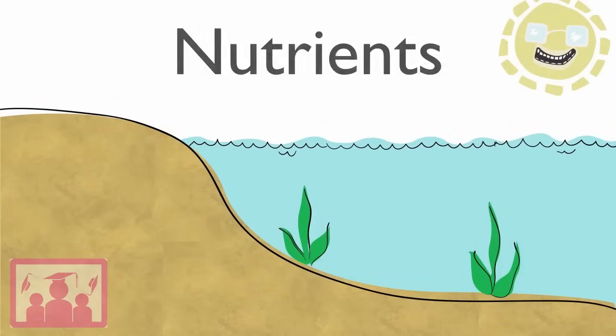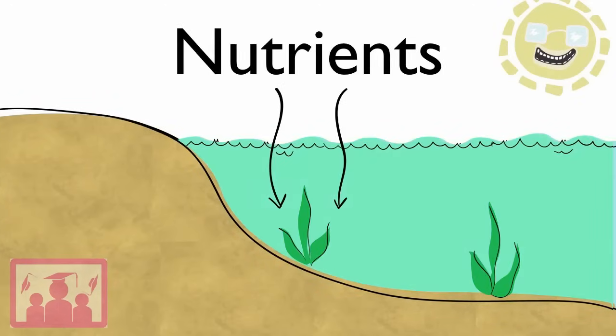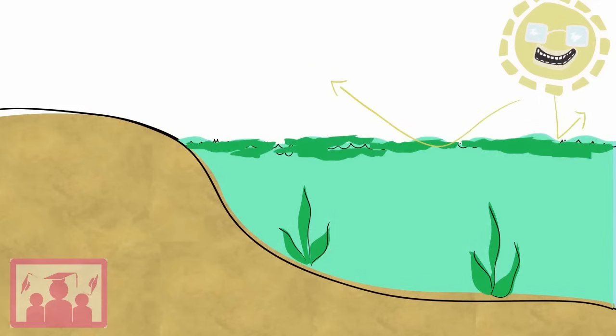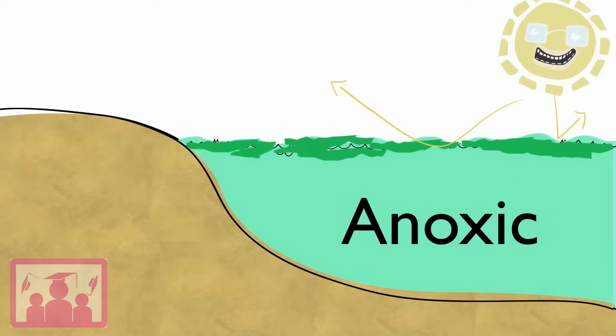So, eutrophication happens when nutrients are added to water, which causes an algal bloom, cutting off sunlight and feeding bacteria. The bacteria use up oxygen in the water, which becomes anoxic, causing everything living in the water to die.